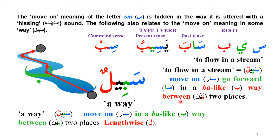'Baina' means 'in between,' and the Lam indicates lengthwise movement. In the word 'Sabeel,' the two points are indicated by the two dots of Ba and the two dots of Ya. Seen is Sara, Ba is a bar-like trench, and Lam is lengthwise movement. So 'Sabeel' means 'a way.'